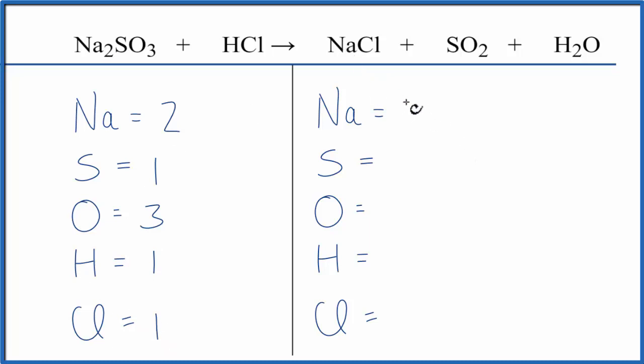On the product side, we have one Na, sulfur's one, oxygens we have two. Be careful though, because there's an oxygen here in the water, so we need to add that. Three oxygens, two hydrogens, and one chlorine.